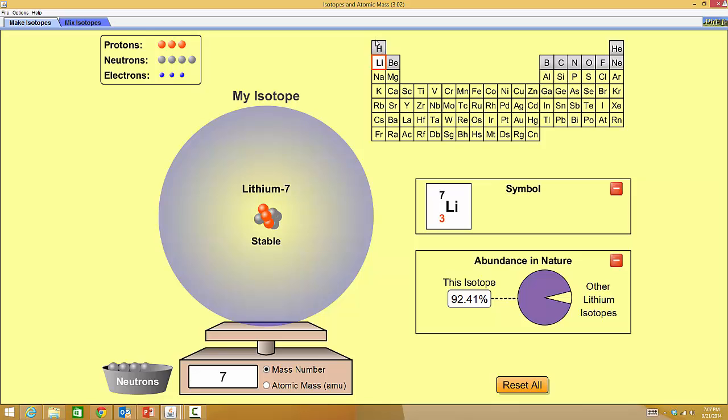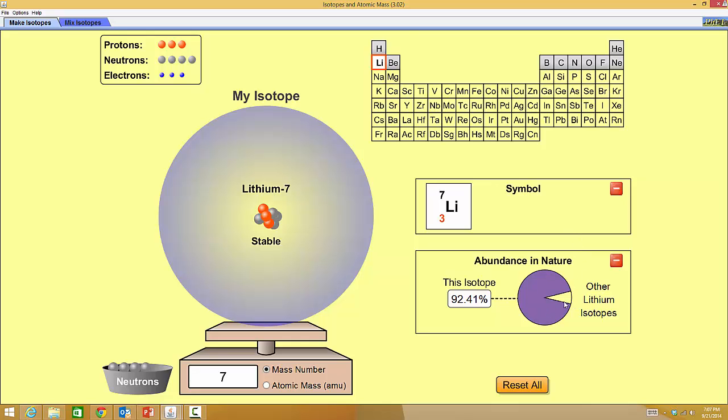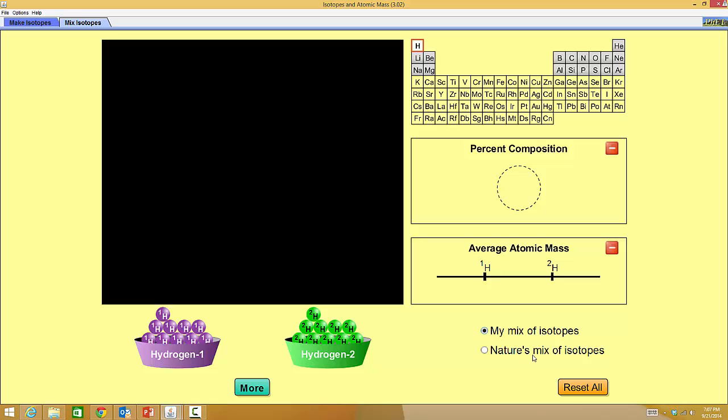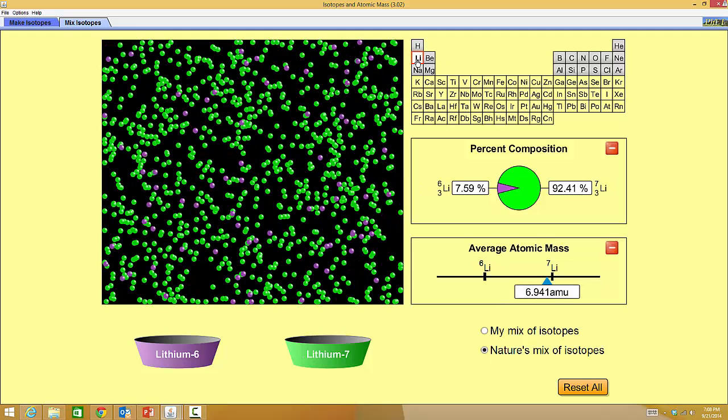Now look over here though. It's saying in nature, hydrogen is almost 100%. We know there's other isotopes, but pretty much close to 100% is this hydrogen one. Lithium, there's two other isotopes. So if we go over here, it's going to show us what nature's mix. If you notice there's just mostly the purple, one little yellow. But look at lithium, you can see there's more of a mix.